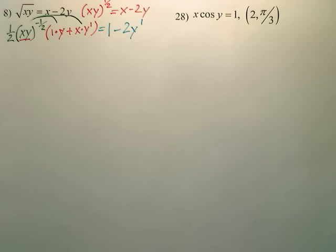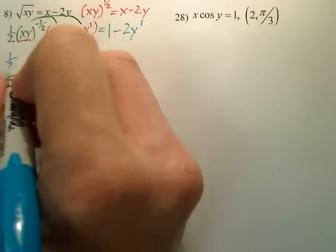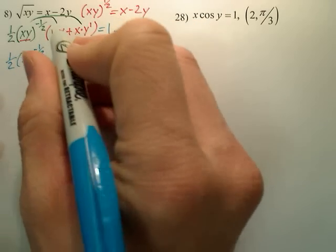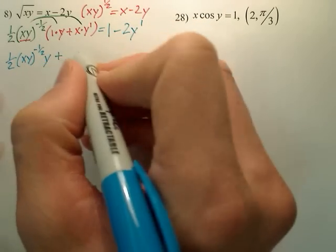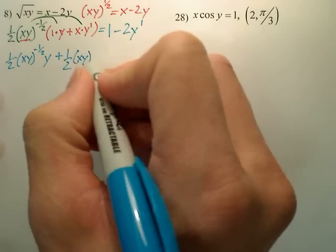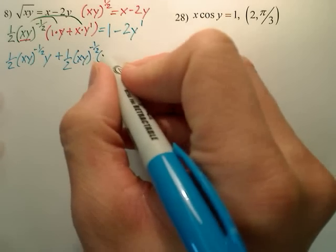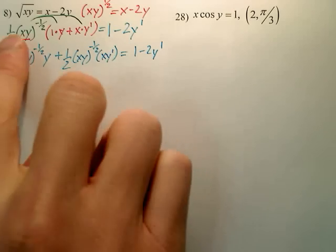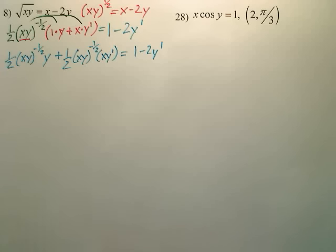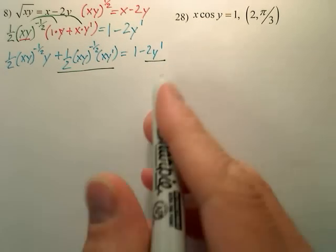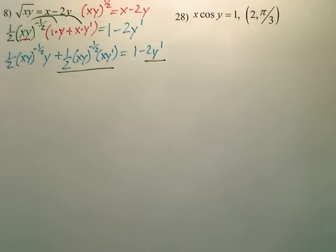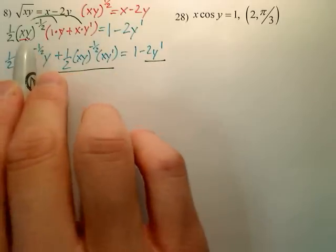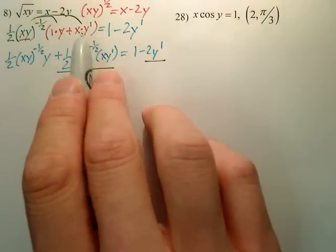We actually have to do a little distributive property here. What's going to happen when I do that is I'm going to get 1/2 xy to the negative 1/2 times y, plus 1/2 xy to the negative 1/2 times xy prime, equals 1 minus 2y prime. That's the first step. You actually have to distribute this. So now I have two sets of y prime, meaning I have this piece and I have this piece, which I can now get the y primes to one side. Before you can't, and that's a common mistake. There's a piece out here that needs to be distributed with it before you move it. Very easy to miss that.